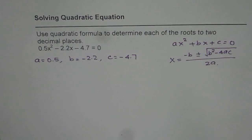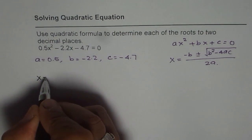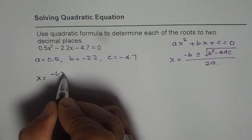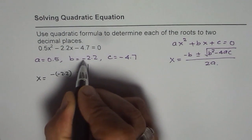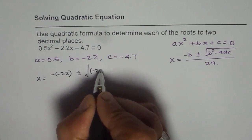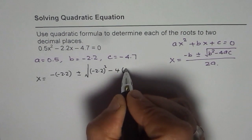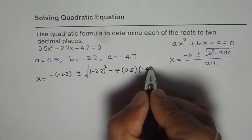Using these values and the quadratic formula, we can find the value of x. So x equals -(-2.2) ± √((-2.2)² - 4(0.5)(-4.7))